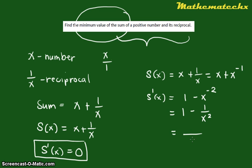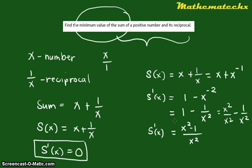We can simplify this: think of 1 as x squared over x squared, so we have x squared over x squared minus 1 over x squared. Adding the fractions gives us (x squared minus 1) over x squared. So S'(x) in simplest form is (x² - 1) / x².